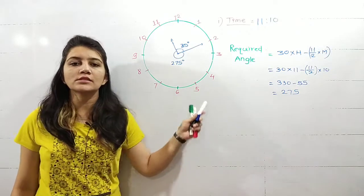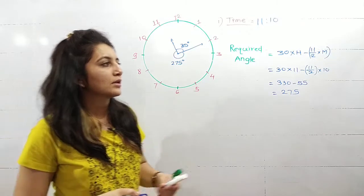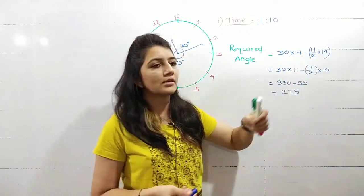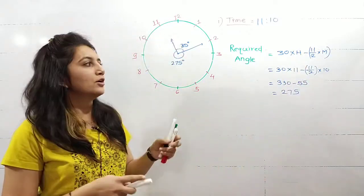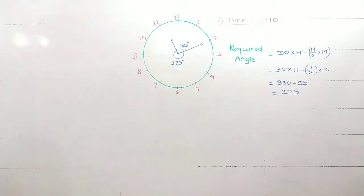Now check, all the answers are exactly the same using this trick. Here the concept used is the relative difference, or the relative difference between the angle rotation of minute hand and hour hand, which is coming out as 11 by 2.